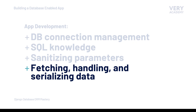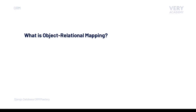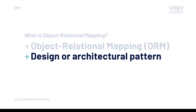That doesn't sound very Django — remember, Django promotes rapid development. So let's go back to object-relational mapping, ORM. What is ORM? ORM is a design or architectural pattern. An architectural pattern can be described as a reusable solution to a commonly occurring problem. So ORM solves a problem — but what is that problem?